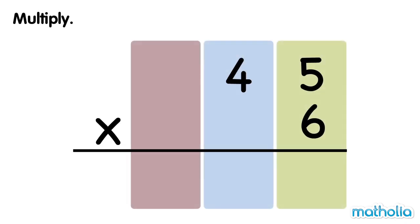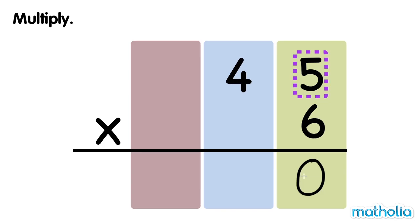Let's find 45 times 6. First, multiply the ones by 6. 5 ones times 6 equals 30 ones. Regroup 30 ones into 0 ones and 3 tens.